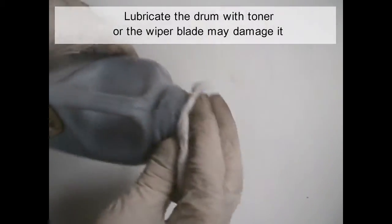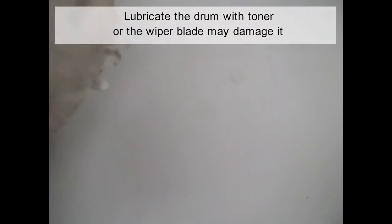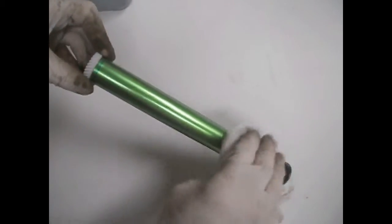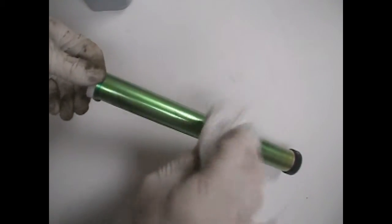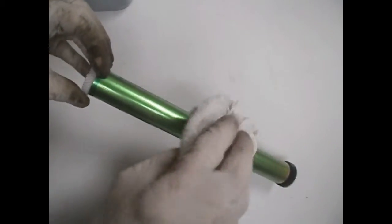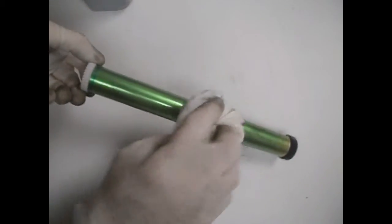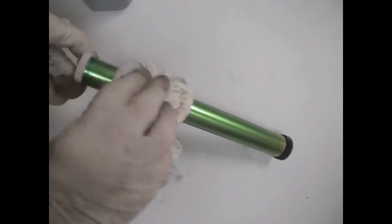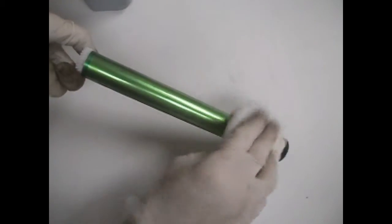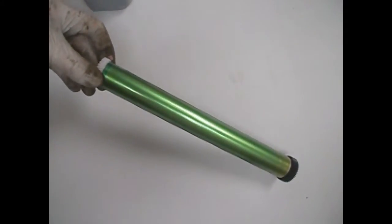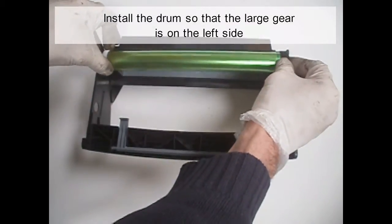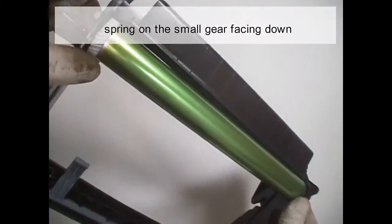Lubricate the drum with toner, or the wiper blade may damage it. Install the drum so that the large gear is on the left side, spring on the small gear facing down.